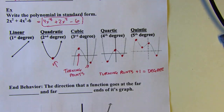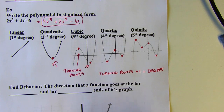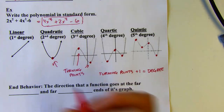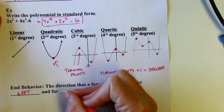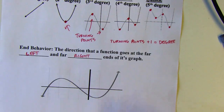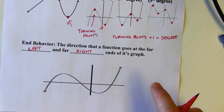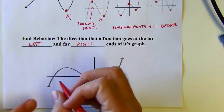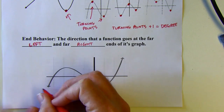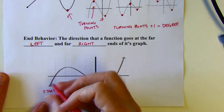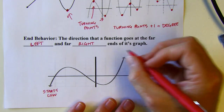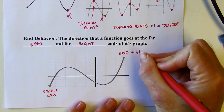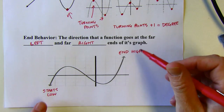Now let's talk about end behavior. End behavior is the direction that a function goes at the far ends of its graph — the far left end and the far right end. I'm interested in what's happening at each end. In layman's terms, reading this graph from left to right, it starts down here, then at the right end it's going up — so it ends high up there.